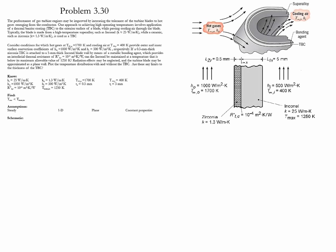Problem 3.3. This problem aims to evaluate the performance of a gas turbine engine and how it is affected by increasing the tolerance that the turbine blades have to the gases that emerge from the combustor. This tolerance can be improved by applying a thermal barrier coating to the blades and also by passing cooling air around the blades.